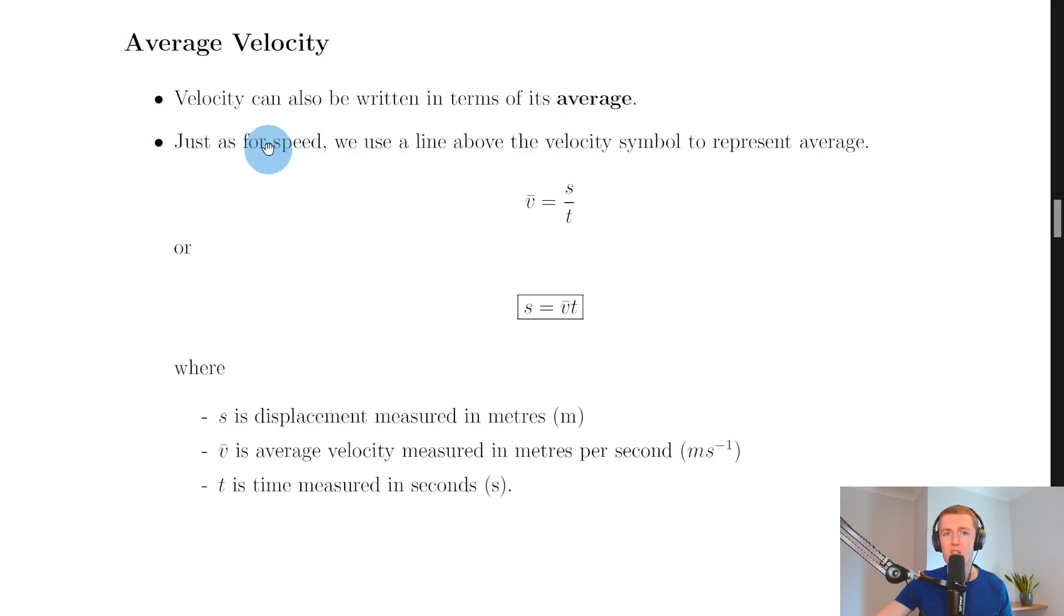Just as for speed, we use a line above the velocity symbol to represent average. Remember, velocity is defined as the displacement per unit time, so we can write down the equation for average velocity in a similar way.